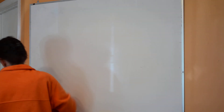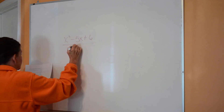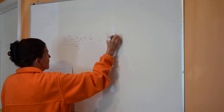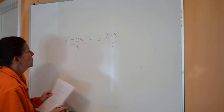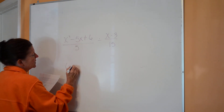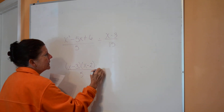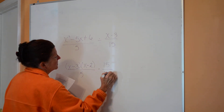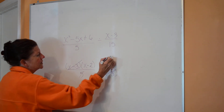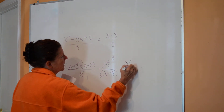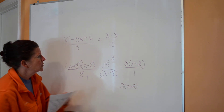Section 12.4 — dividing rational expressions. Remember to invert and multiply. I have (x²−5x+6)/5 divided by (x−3)/15. I factor the top to (x−3)(x−2) over 5, then flip the second fraction: multiply by 15 over (x−3). The (x−3)s cancel, and 15/5 reduces to 3, leaving 3(x−2).